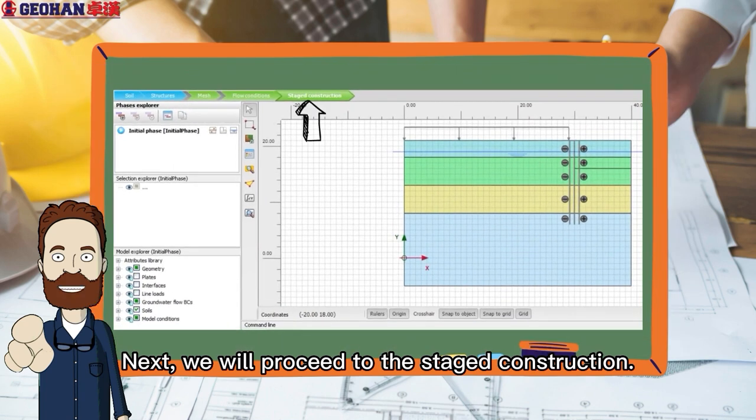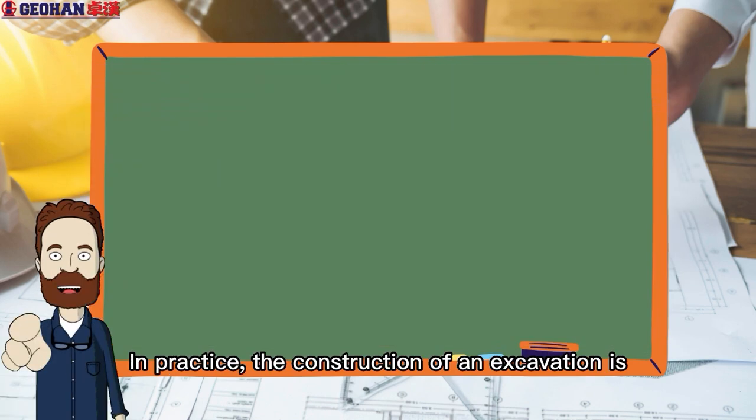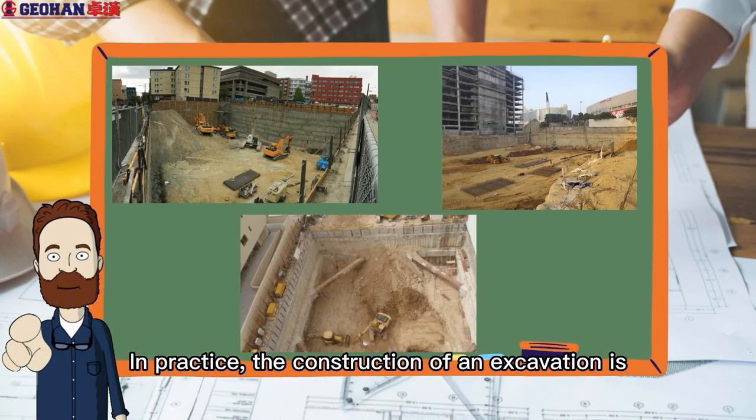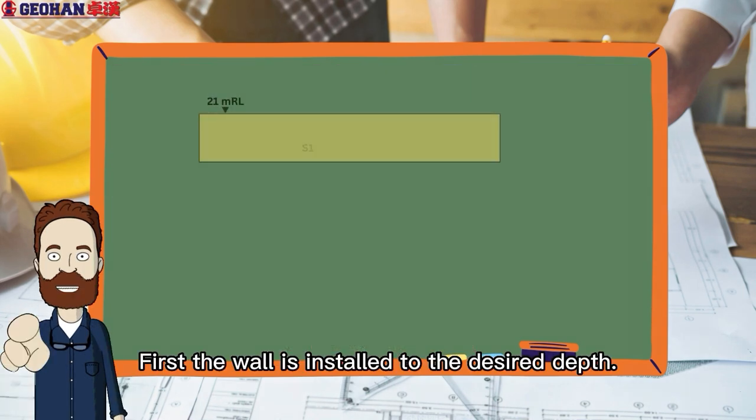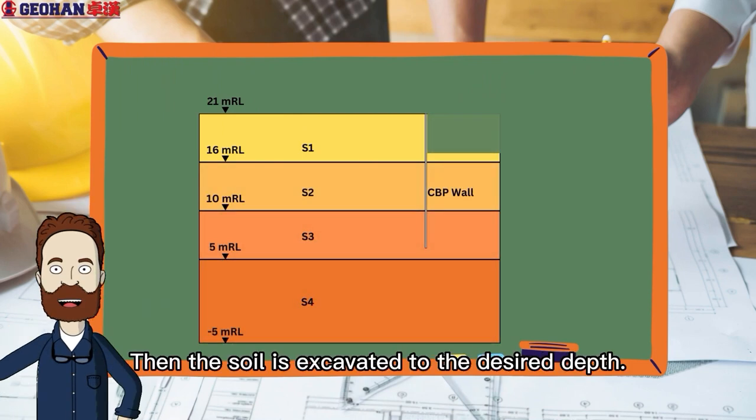Next, we will proceed to the staged construction. In practice, the construction of an excavation is a process that can consist of several phases. First, the wall is installed to the desired depth. Then, the soil is excavated to the desired depth.